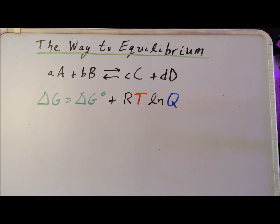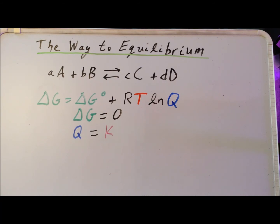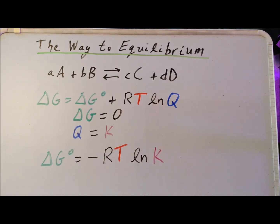First, let us assume we're at equilibrium. If we are at equilibrium, we know that ΔG is equal to zero. Also, if we're at equilibrium, then the reaction quotient Q is identically equal to the equilibrium constant K. If we make those substitutions into the previous equation and do a little bit of algebraic tidying up, we get an incredibly useful result: the standard Gibbs energy ΔG° is equal to −RT times the natural log of K. So here we have another thermodynamic quantity — the standard Gibbs energy ΔG° — that is directly related to the equilibrium constant.